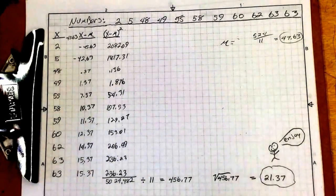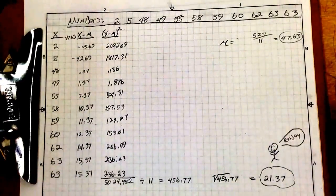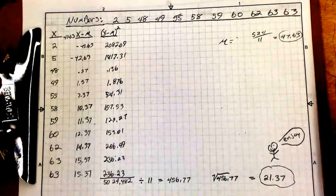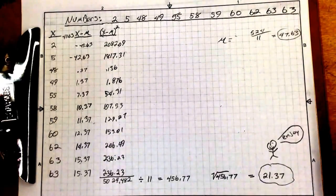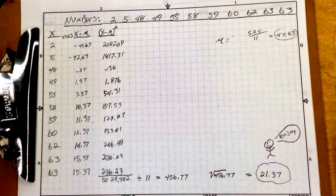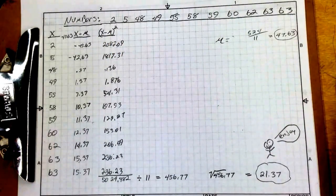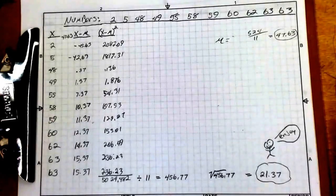So the standard deviation of this number set is 21.37. Now I know that this is a very confusing concept. It takes a long time to understand it. So please stop this video, rewind, replay as many times as you need to understand how to mathematically get the standard deviation of a number set. If you've got any questions, see me individually. Peace out.